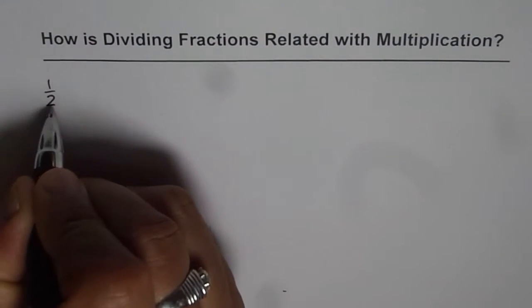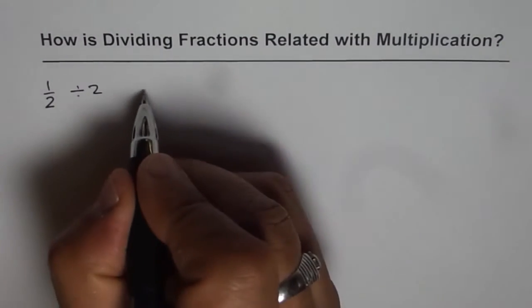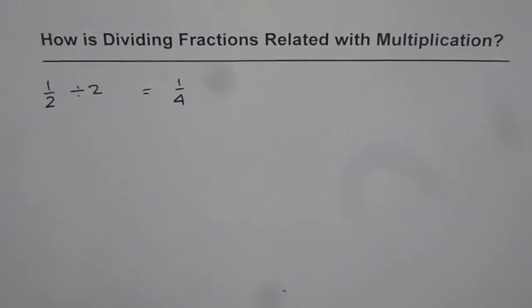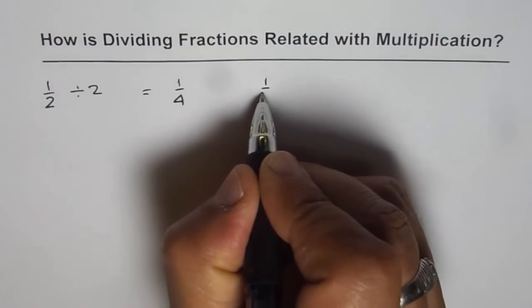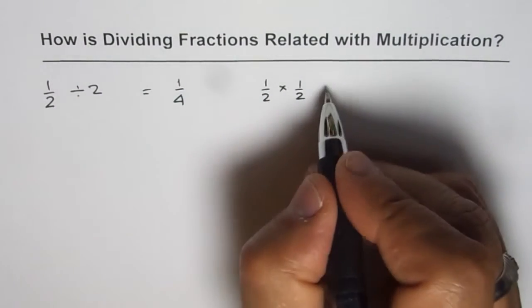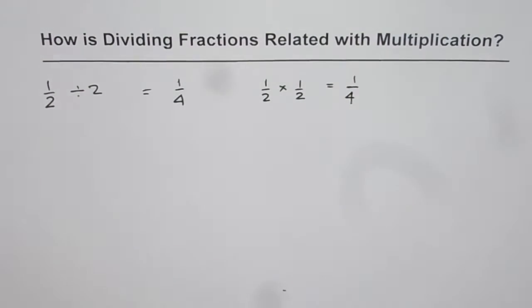Let us say we have to divide half by 2. Now half divided by 2, you know, is 1 fourth. We can also get 1 fourth by multiplying half by 1 over 2. If I multiply half by 1 over 2, I get 1 over 4. The same answer.